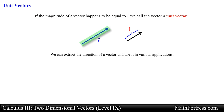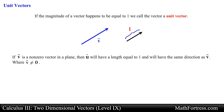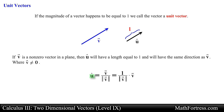If vector v is a non-zero vector in a plane, then vector u can be found by taking vector v and dividing it by the magnitude of vector v. This new vector u will have a length equal to 1 and will have the same direction as vector v, as long as vector v does not equal 0. We can denote the unit vector by using a bold lower case u, or we can draw a hat symbol directly above the letter u. This symbol lets you know that this particular vector represents a unit vector.